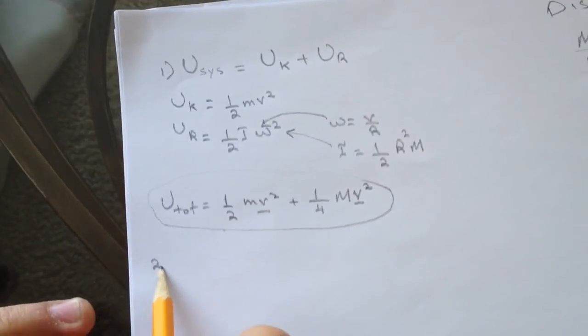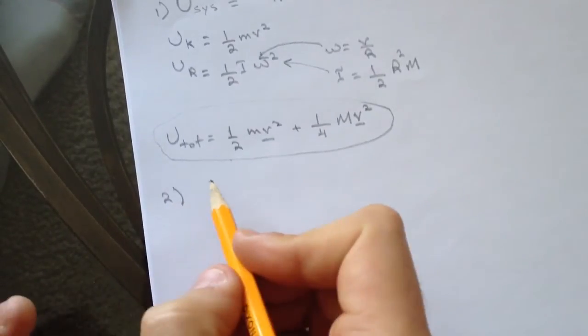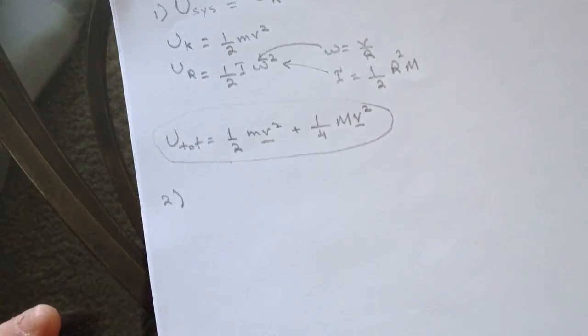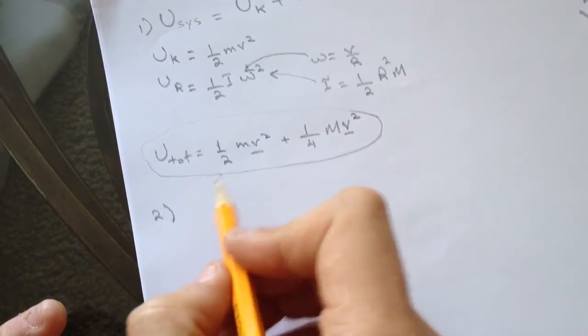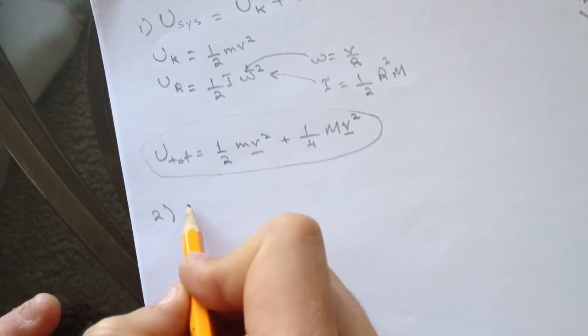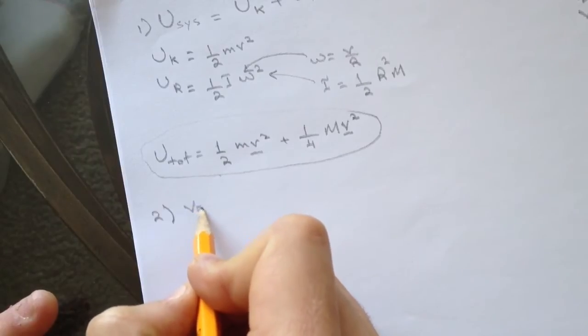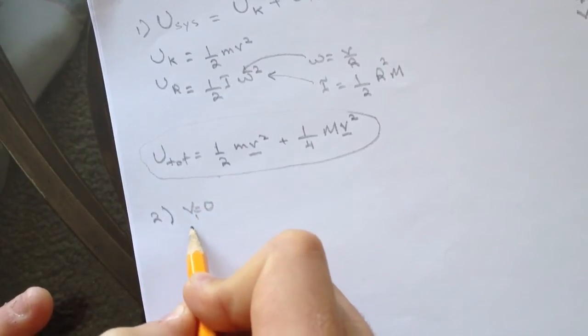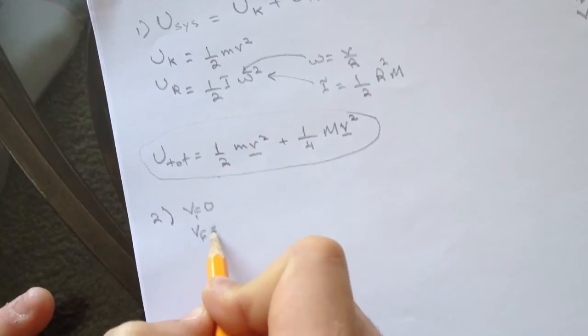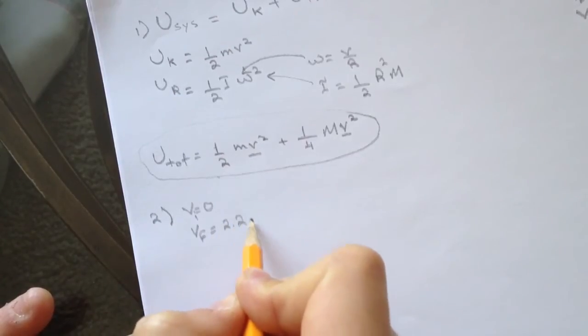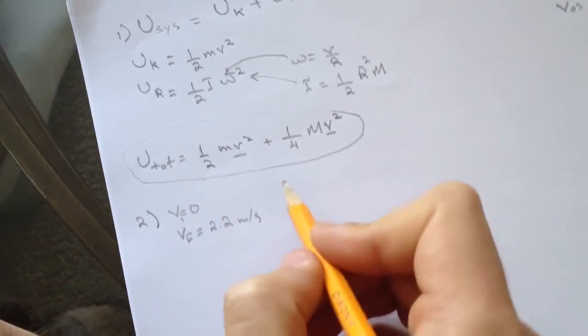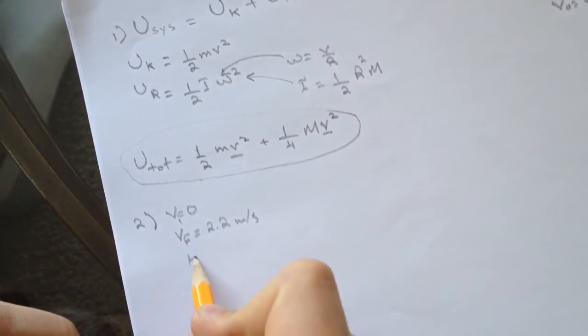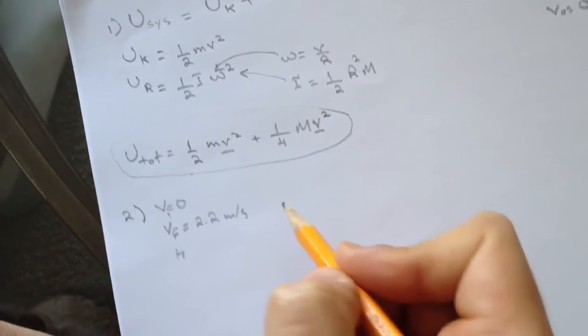Number two asks if the system started from rest, how far has the weight fallen? We know V_i equals 0, and we know it ended with 2.2 meters per second. We want to find the height that the weight has fallen.